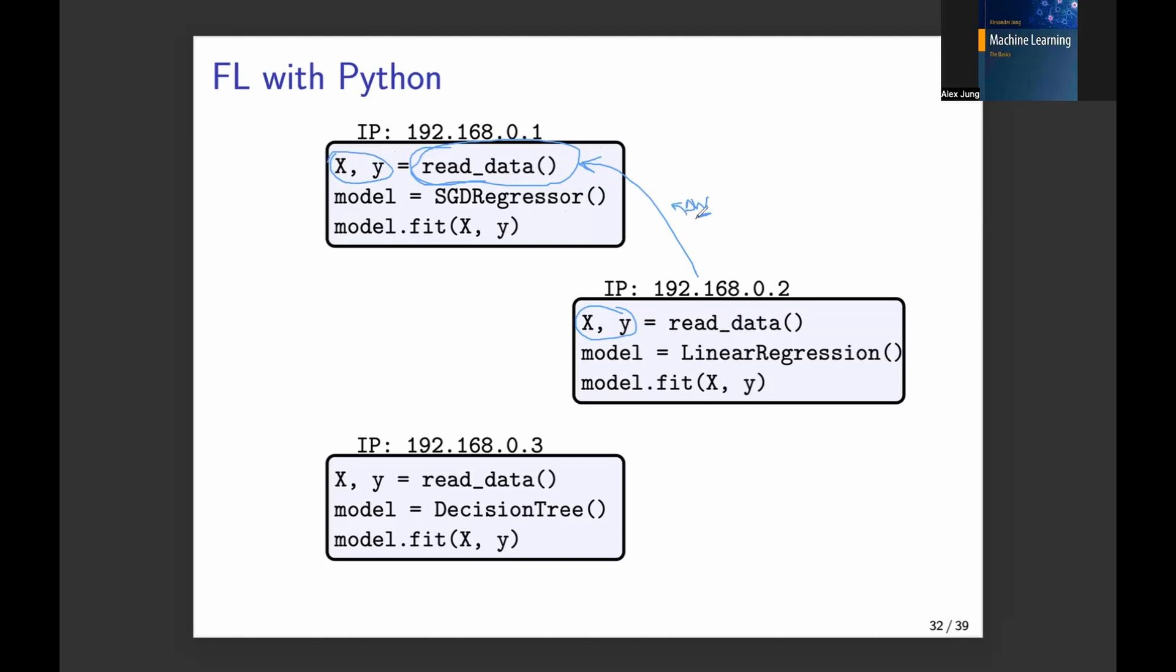which just exchange these model parameter updates. And similarly, you could use here in this read data function on this device, you could read in the data from here and from here. And of course, you typically cannot communicate with all devices, but you have some network structure and we will encode this network structure or represent this communication structure of a federated learning system using this concept of federated learning networks, which we will see later.